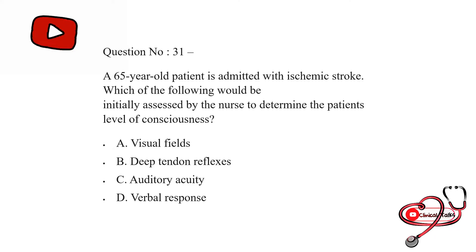Question number 31. A 65-year-old patient is admitted with systemic stroke. Which of the following would be initially assessed by the nurse to determine the patient's level of consciousness? Option first: visual fields; second: deep tendon reflex; third: auditory acuity; last: verbal response. The correct answer is verbal response. To assess the level of consciousness, we normally use GCS — Glasgow Coma Scale — in which verbal, motor, and eye response are checked.